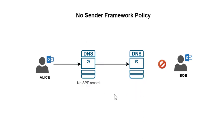Bob's server will tell Alice's server: 'If you don't have an SPF record, I cannot be sure that Alice is sending the email to Bob.' Alice's DNS server doesn't have the list of Alice's allowed IP addresses. The Sender Policy Framework is essentially that list of allowed IP addresses that can send email on behalf of Alice or Alice's domain. So Bob's server will say: 'Delivery denied, sorry.' The message will not reach Bob.